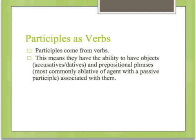Participles come from verbs, so they're derived from verbs. This means they have the ability to take objects — that is, accusatives and datives — so that's your direct object for accusatives and indirect objects for datives, and prepositional phrases. Most commonly, an ablative of agent with a passive participle. For example, 'the boy was loved by the king' — 'by the king' would be associated with that participle.